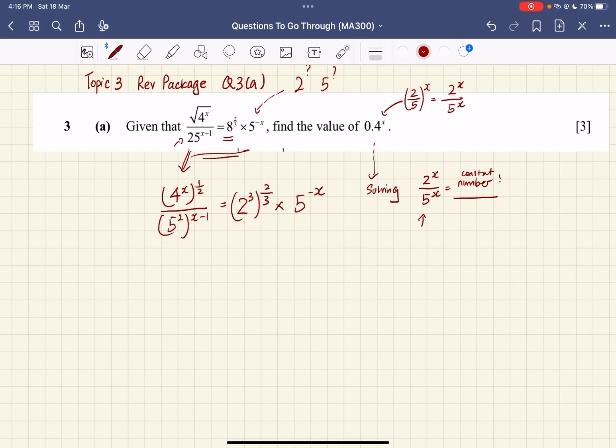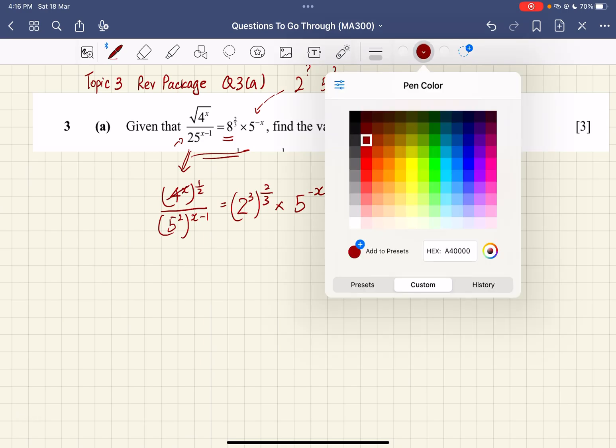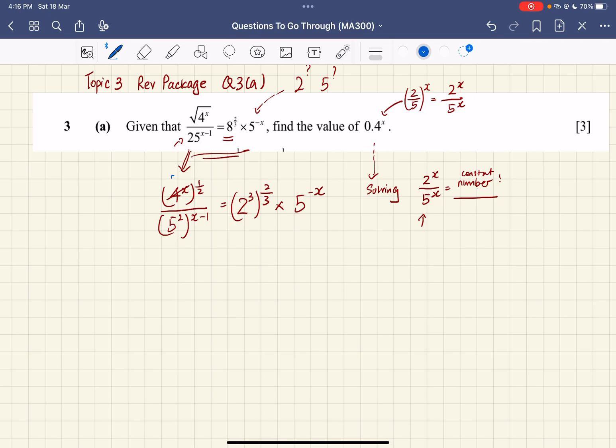Now 4^x can be written as 2 to the power of 2x, because 4 is just 2 squared. And 2^(2x) times 1/2 - we know that in indices, a^(mn) is the same as a^(m×n). So this will be 2x multiplied by 1/2, which gives us x. So you have 2 to the power of x.